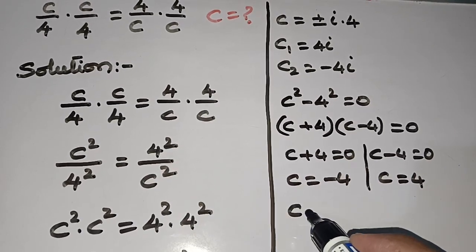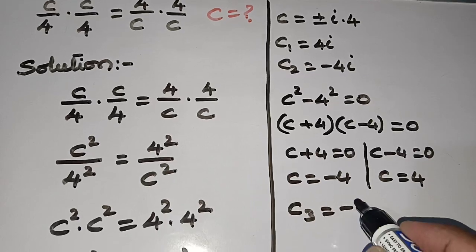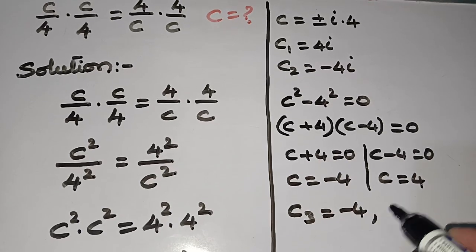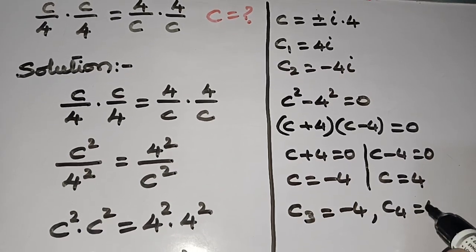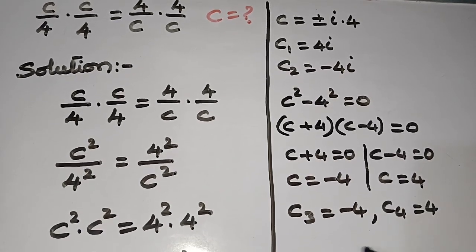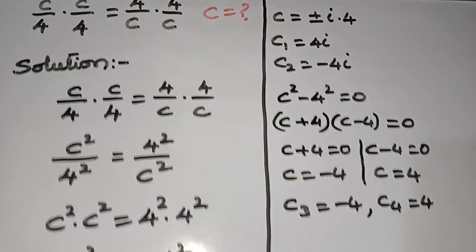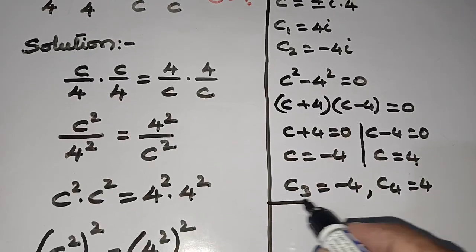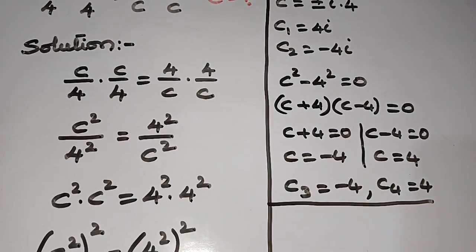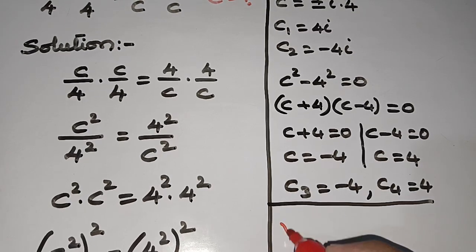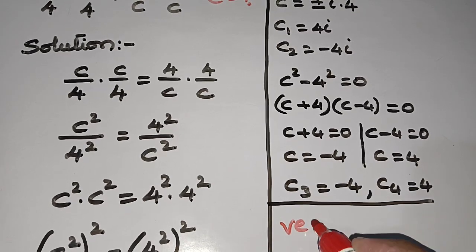So c₃ = -4 and c₄ = +4. These are the four values we have got. Now we can check which of these values satisfy the given equation.